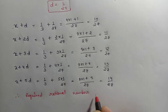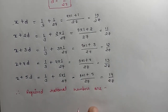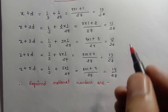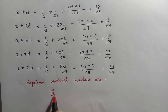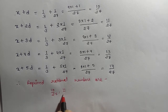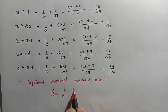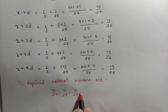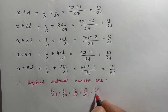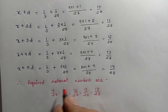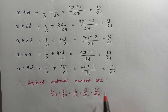Required rational numbers कौन-कौन से हैं? First: 10/27, second: 11/27, third: 12/27, fourth: 13/27, and fifth: 14/27। ये 5 rational numbers आपको find करने थे। So these are your 5 rational numbers between 1/3 and 5/9।